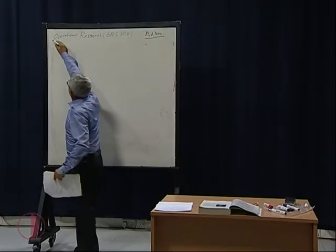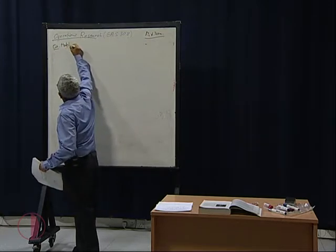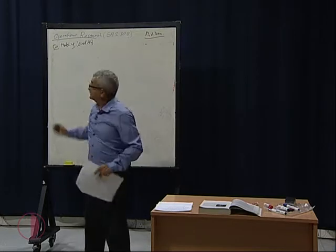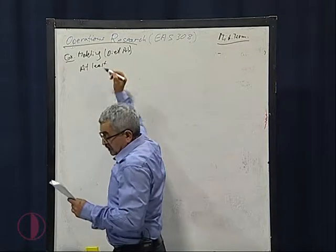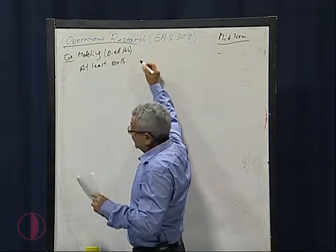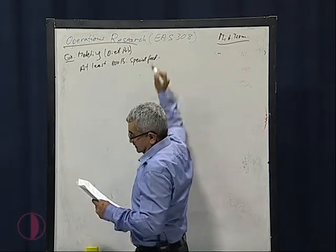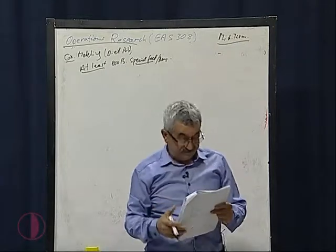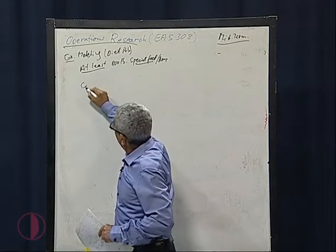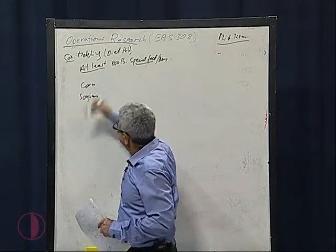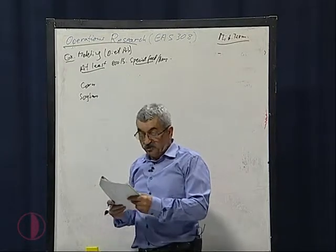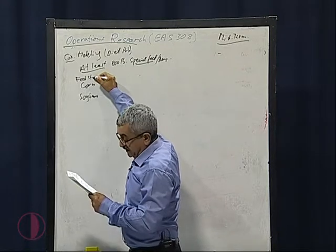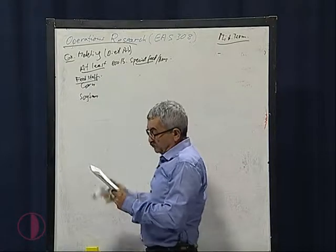Today I'm going to give you another example called the diet problem. This is a modeling example from your book. There is a farm that uses at least 800 pounds of special feed for the animals daily. This special feed is a mixture of corn and soybean — these are the ingredients, called feedstuffs.